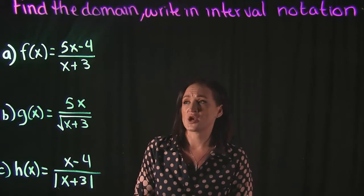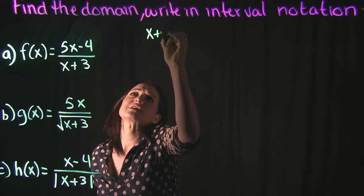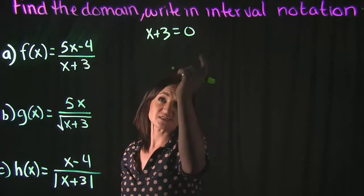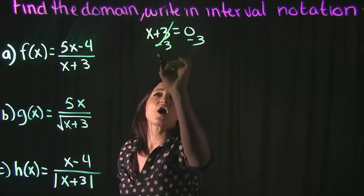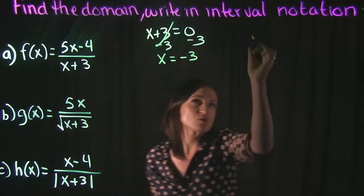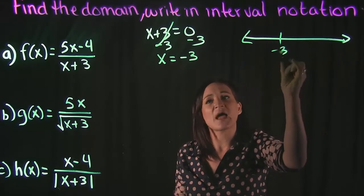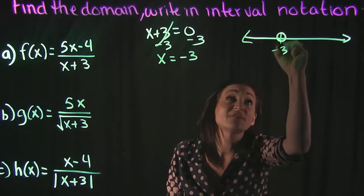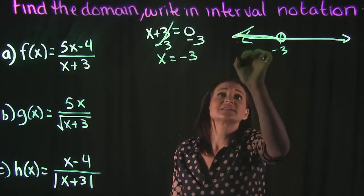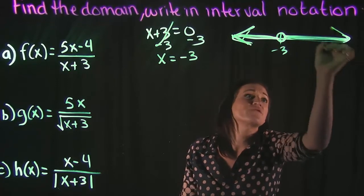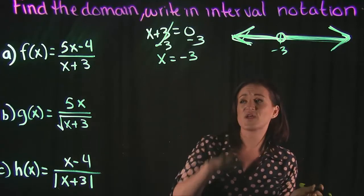So our domain is everything except those values. For example A, our denominator is x plus three. We set that equal to zero and solve — subtracting three on both sides gives us x equals negative three. Looking at this on a number line, this tells us we have a hole at negative three, and our domain exists everywhere else.